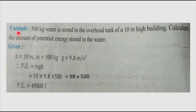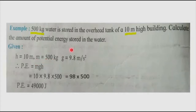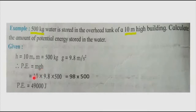Now let's see an example of potential energy. 500 kg of water is stored in the overhead tank of a 10-metre-high building. Calculate the potential energy stored in the water. Given: M = 500 kg, H = 10 m, g = 9.8 m/s². Potential energy = MgH = 500 × 9.8 × 10 = 98 × 500 = 49,000 Joule.